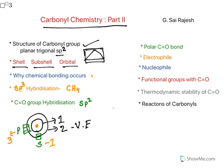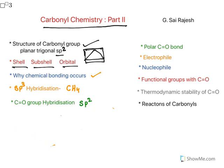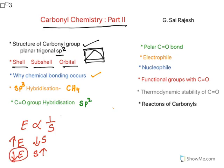I also explained why chemical bonding occurs. Chemical bonding revolves around the stability of the molecule. Energy is inversely proportional to stability — if a molecule has high energy, the stability will be low. If energy is low, the molecule will have high stability. The goal of all atoms and molecules is to have less energy and be stable.